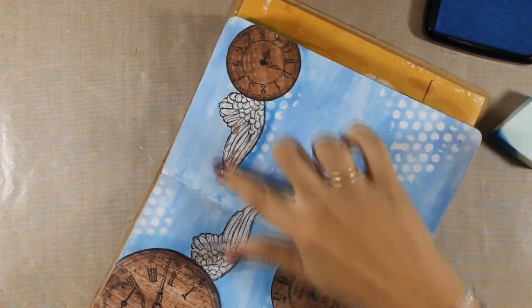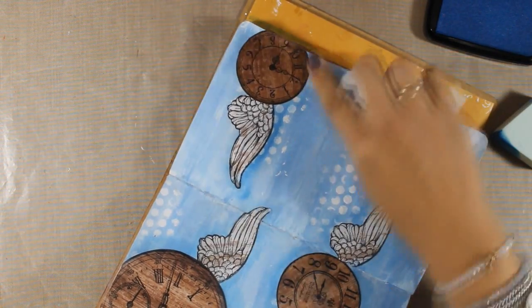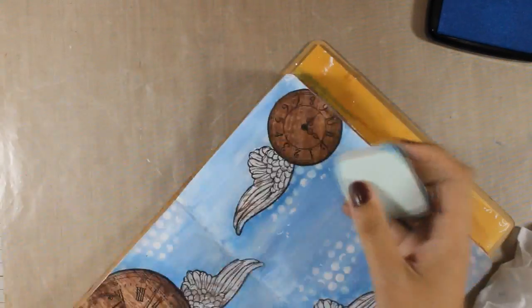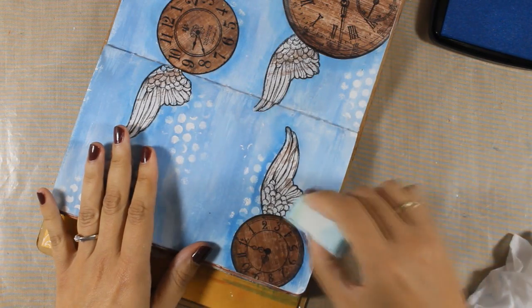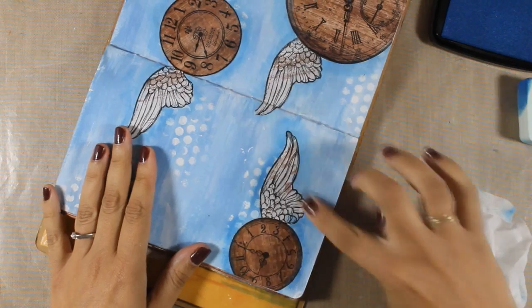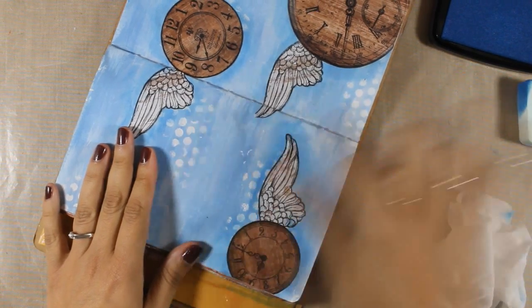As you can see I can smudge the ink with my finger if I want to or with a baby wipe. I'm adding shading all around the clocks and the wings on my layout and this is going to help these elements to pop out of my background.